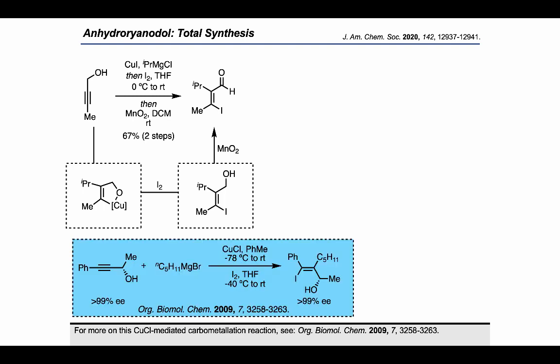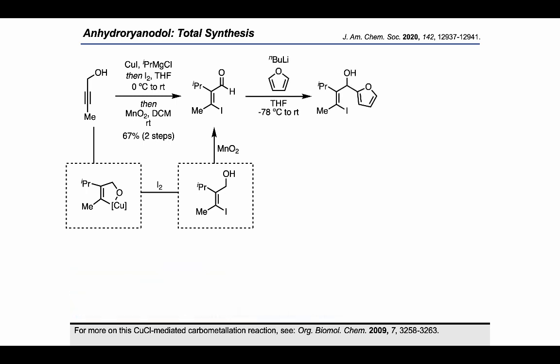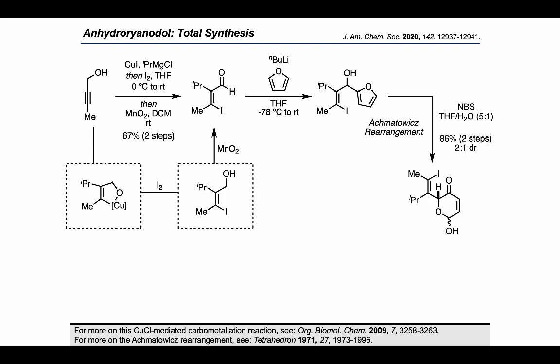In the reference methodology, it was also demonstrated that this method can be applied to the difunctionalization of enantio-enriched propargylic alcohols without any erosion of enantiopurity. Returning to the synthesis, lithiation of a furan and addition into the aldehyde set up a furfuryl alcohol motif in the product. This allowed the authors to employ an Achmatovich rearrangement by treating with NBS in THF and water to arrive at the acetal product.